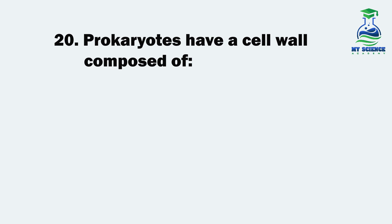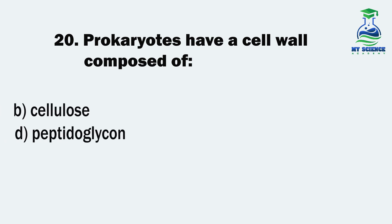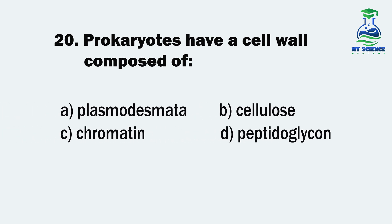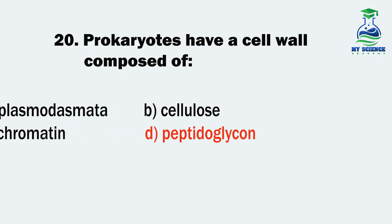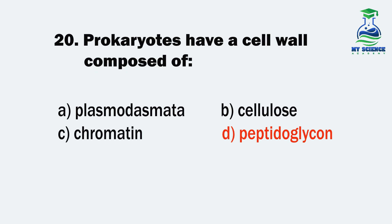Question 20. Prokaryotes have a cell wall composed of: A. Plasmodesmata, B. Cellulose, C. Chromatin, or D. Peptidoglycan. And the correct option is D. Peptidoglycan.